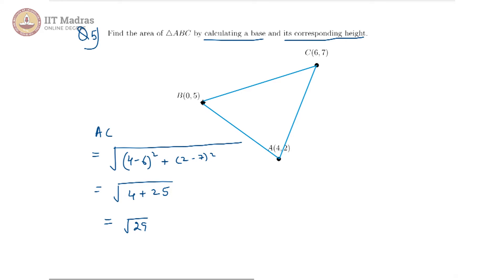Now the altitude, the height from B would be something like this. Let us call this point D and this is 90 degrees. So B to D, that length would be the height. So BD is going to be the distance of the point B from the line AC, the shortest distance of point B from the line AC. So for this, we can use the distance formula of a point from a straight line. However, we first need to find out the equation of AC.